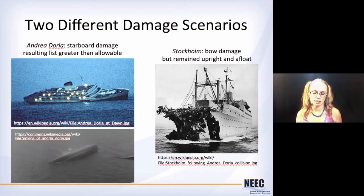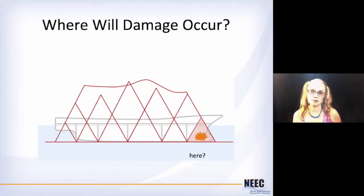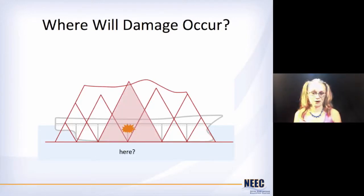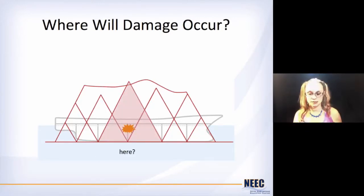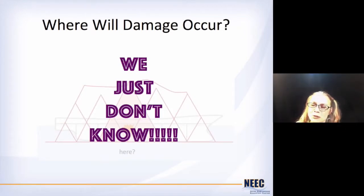So what can we do? There's got to be something better. The problem is we don't know where the damage is going to occur. We don't know — could it be here? Or it might be here. Or it might be here. It might take out two compartments and that ship would sink. We just don't know what to do.